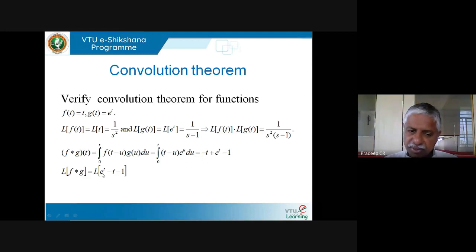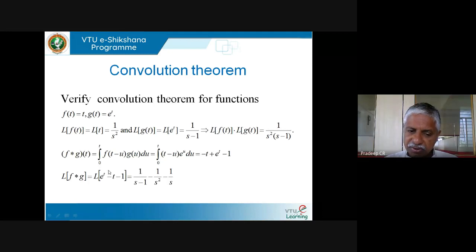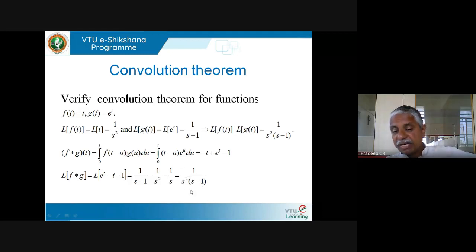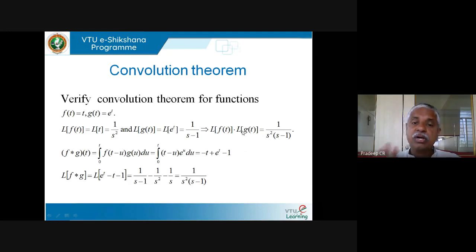Now L{f★g} = L{eᵗ − t − 1} = L{eᵗ} − L{t} − L{1} = 1/(s−1) − 1/s² − 1/s. Simplifying, this equals 1/(s²(s−1)), which is the same as L{f}·L{g}. So L{f★g} = L{f}·L{g} — convolution theorem verified!